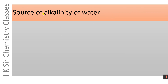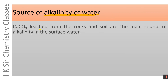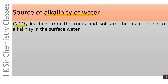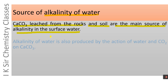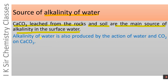What are the sources of alkalinity of water? CaCO3 leached from the rocks and soil are the main source of alkalinity in surface water. Alkalinity of water is also produced by the action of water and CO2 on CaCO3.